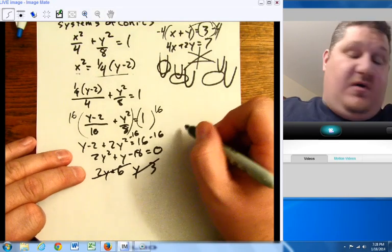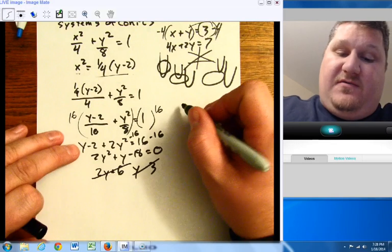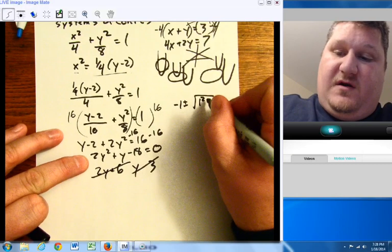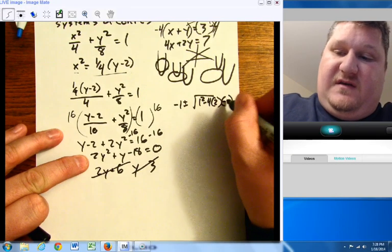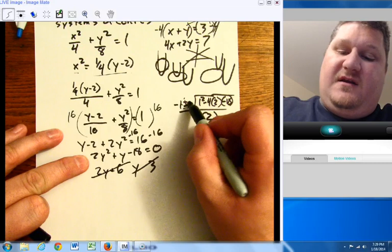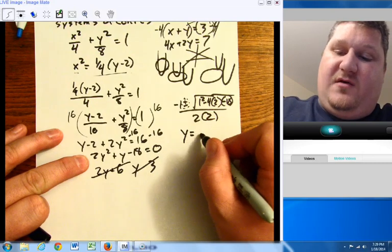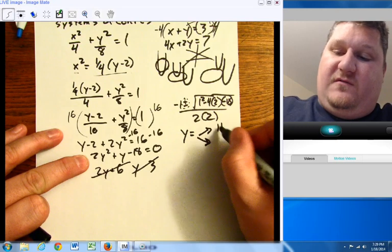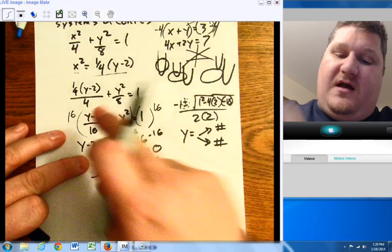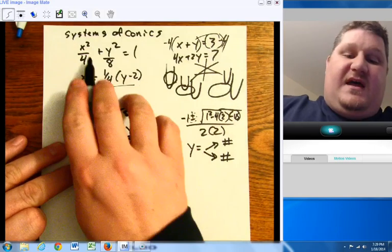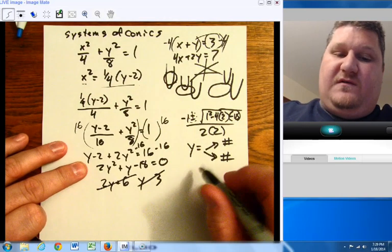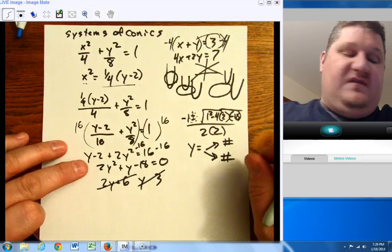When you go to the quadratic formula, you're going to come up with opposite of one plus or minus the square root of one squared minus four times two times negative 18, all over two times two. You'll notice that plus or minus means when I come down here, I get y equals two different values. What I have to do is then take those two different y values, plug them back in, and because I have an x squared and a y squared, we're going to more than likely come up with four different values with two y's and two x's and the way they go.